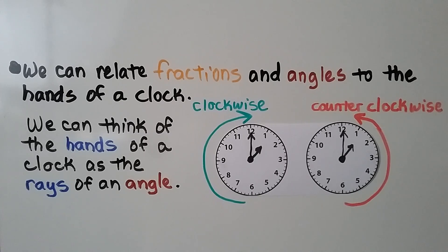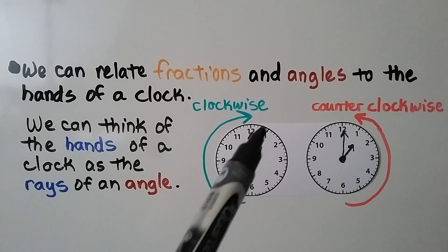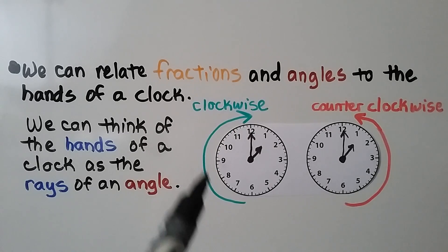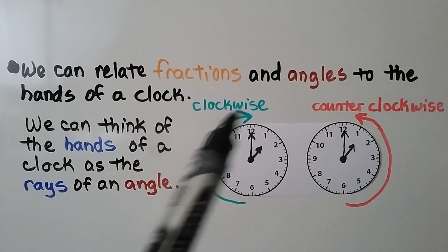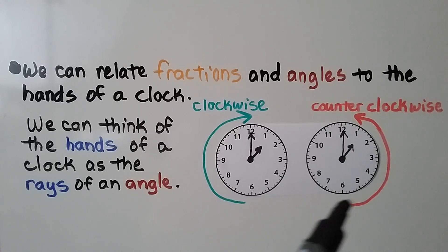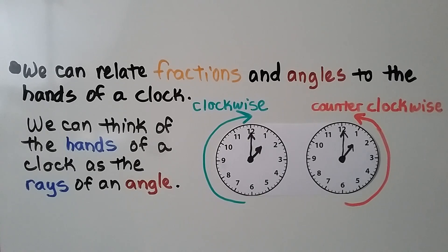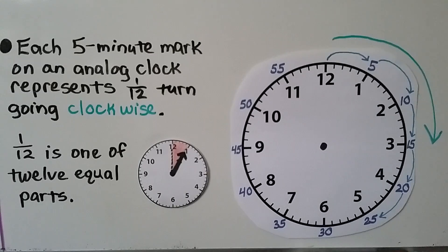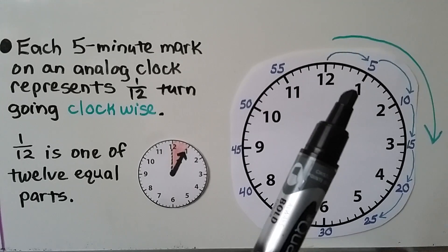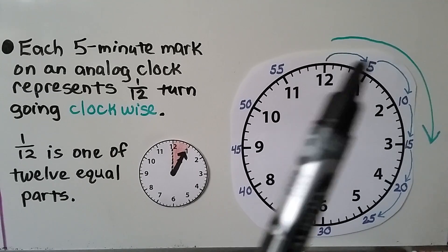We can relate fractions and angles to the hands of a clock. We can think of the hands of a clock as the rays of an angle. A clock's hands go clockwise, and if we go opposite the direction of a clock's hands, we're going counterclockwise. Each five-minute mark on an analog clock represents one-twelfth turn going clockwise. From the twelve to the one, that's five minutes.